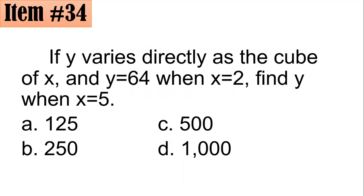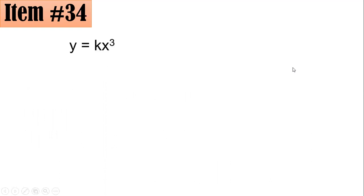Item 34: If y varies directly as the cube of x and y equals 64 when x equals 2, find y when x equals 5. Since y varies directly as the cube of x, we set up y equals k times x cubed, where k is the constant of variation. If it varies inversely, x cubed would be in the denominator instead.